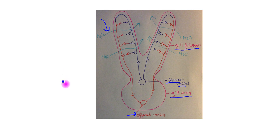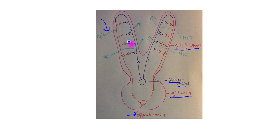Before we move on to look at the counter current mechanism, just a quick recap about gas exchange surfaces. The features that make them good at carrying out gas exchange are: they've got to have a large surface area, they have to be permeable to gases, they've got to have a good blood supply, they have to be thin with a short diffusion pathway, and they also have to be moist. The gill lamellae will actually have all of those features, as they are the gas exchange surface.